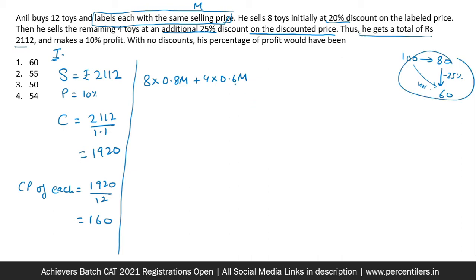So remaining four at 40% discount. So 0.6M and this leads to 2112. I guess I am going to divide this entire equation by eight. So I'll be left with 0.8M plus 0.3M will be equal to this. Basically, I can find M from here as 2640 by 11, 240.